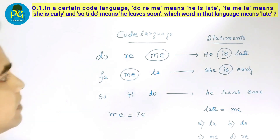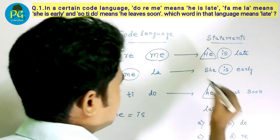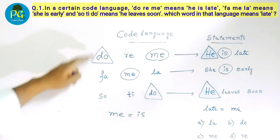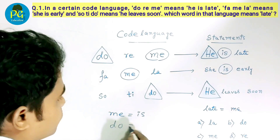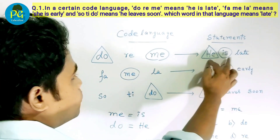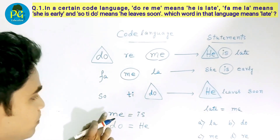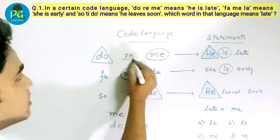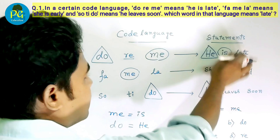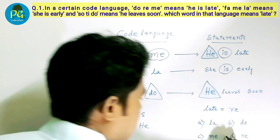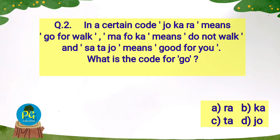In the first and third lines, 'do' is common, so we can conclude 'do' equals 'he'. Now in the first line, the words 'he' and 'is' are accounted for by 'do' and 'me'. The remaining word is 're', so 're' is the code word for 'late', meaning 'let equal to re'. The correct option is D. Question number two: in a certain code, 'jo ka ra' means 'go for work', 'ma fo ka' means 'do not work', and 'sa ta jo' means 'good for you'. What is the code for 'go'? Options: A) ra, B) ka, C) ta, D) jo.